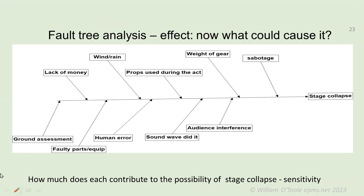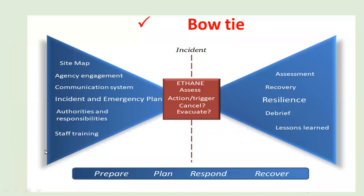You then look at what each of these things contributed to the collapse of the stage. Which factor contributes to the possibility of stage collapse the most? Is it the lack of a ground assessment, audience interference, the weight of the gear, or the weight of people getting on the stage? Weight of people has caused stage collapse before. That leads into sensitivity analysis — you're looking at: if you increase it by a fraction, will the stage collapse? What is that fraction? That's what sensitivity analysis examines.